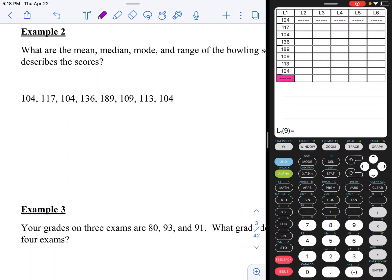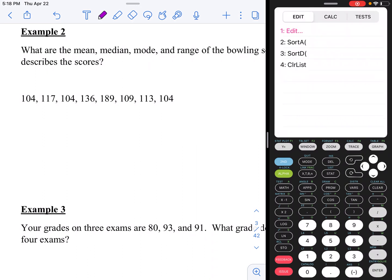Once all your data is put into the calculator, you are going to hit that stat button again and you are going to scroll to the right to where it says calc and you are going to calculate all the statistics by choosing that first option, one variable stats, hit enter and you want to make sure your list says L1.